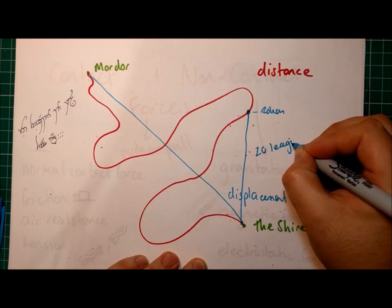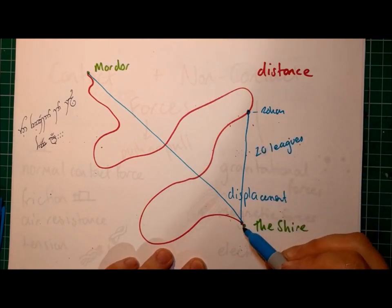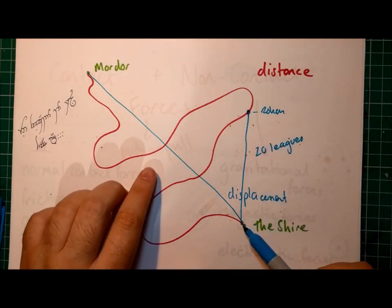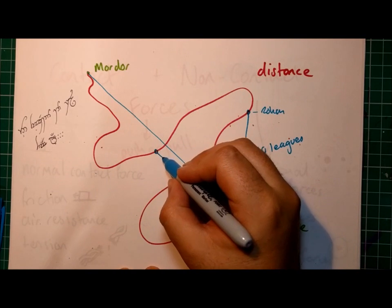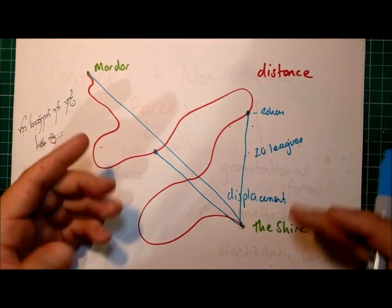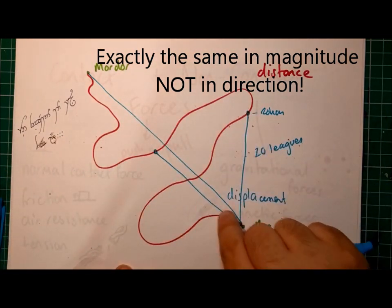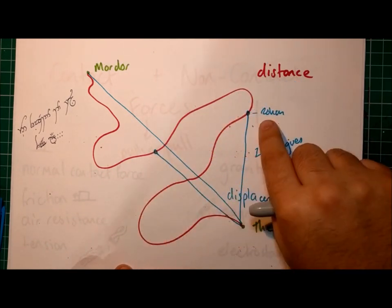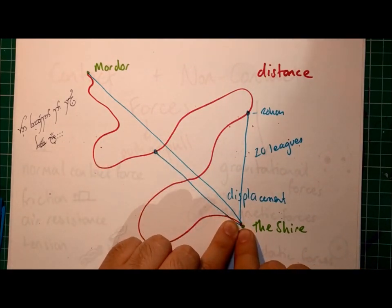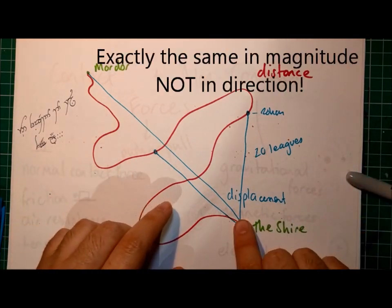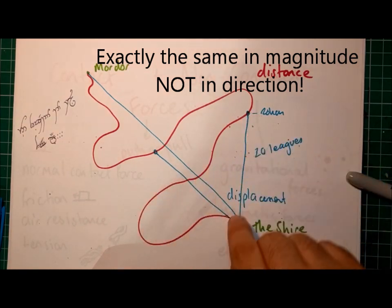For instance, the displacement from the Shire to here, let's say that's Rohan, let's say that was 20 leagues. And then if we consider the straight distance displacement from the Shire to maybe here, which maybe that's the murky swamp, those two displacements are exactly the same. In terms of the distance they've traveled, they've traveled a lot further to get to the murky swamp. But in terms of their displacement, how far from the Shire are they? They've traveled exactly the same displacement.